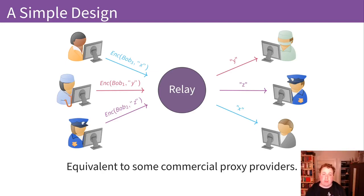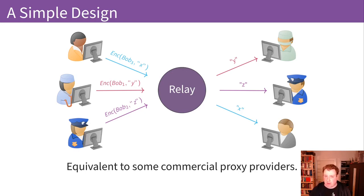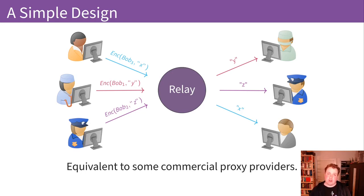Let's build a mental model of how the Tor network works. First, consider how a single relay system works — this is very similar to how a VPN provider works. In a VPN scenario, a number of users use a single relay — the VPN server. They encrypt traffic to the VPN host, which decrypts it and sends it out to the internet. This protects the user's data in transit between the user and the VPN provider.